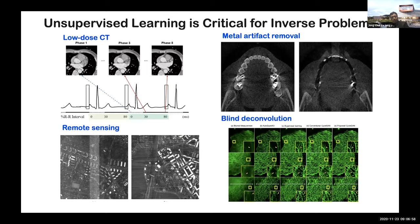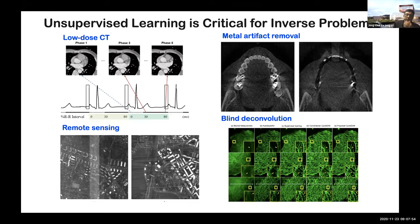Consider metal artifact removal in dental CT applications: to train a neural network in a supervised way, we need matched data with and without metal artifacts, which is not possible. In remote sensing using satellite imaging, many sensors have artifacts such as striping or horizontal artifacts, but it is impossible to obtain images without the artifact at the same time. In blind deconvolution in microscopic imaging, we measure blurry images and the goal is to estimate the unknown high-resolution image; in practice it is not possible to obtain matching pairs. So we need a method to train the neural network without matching data.